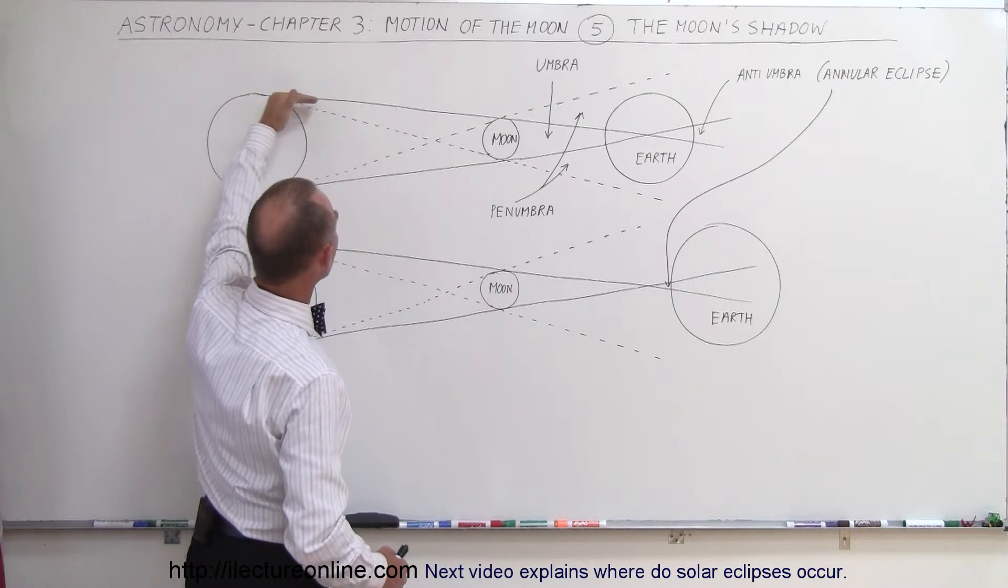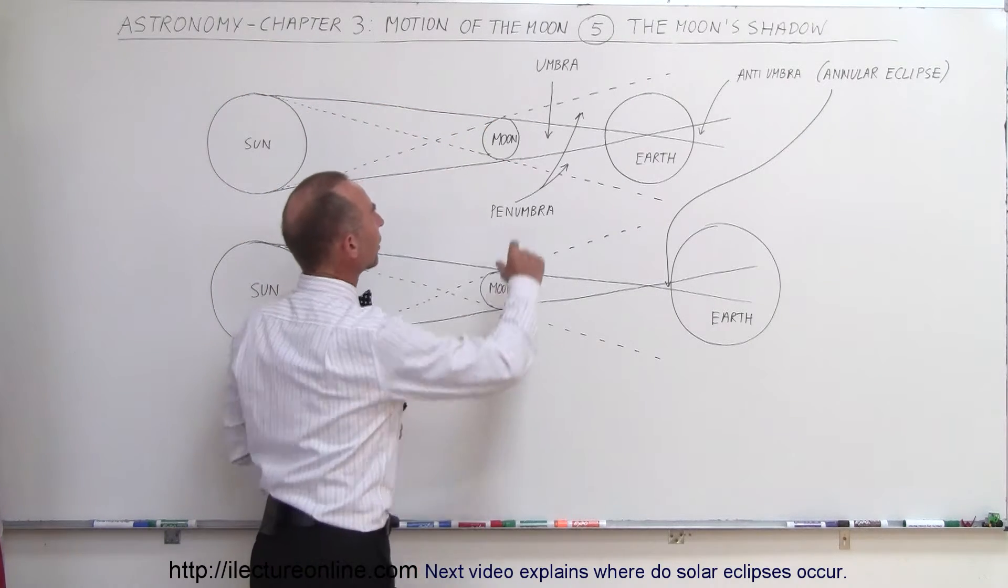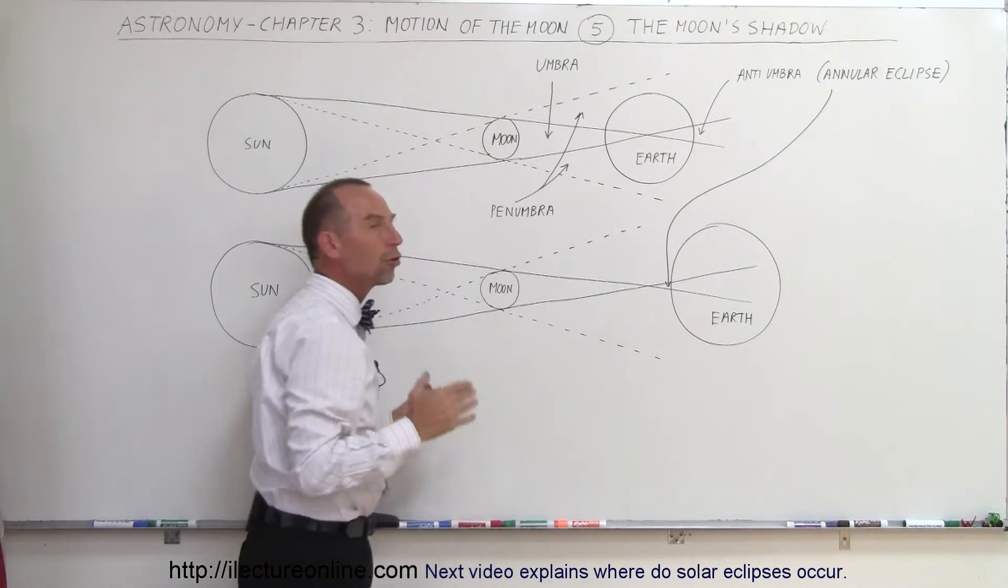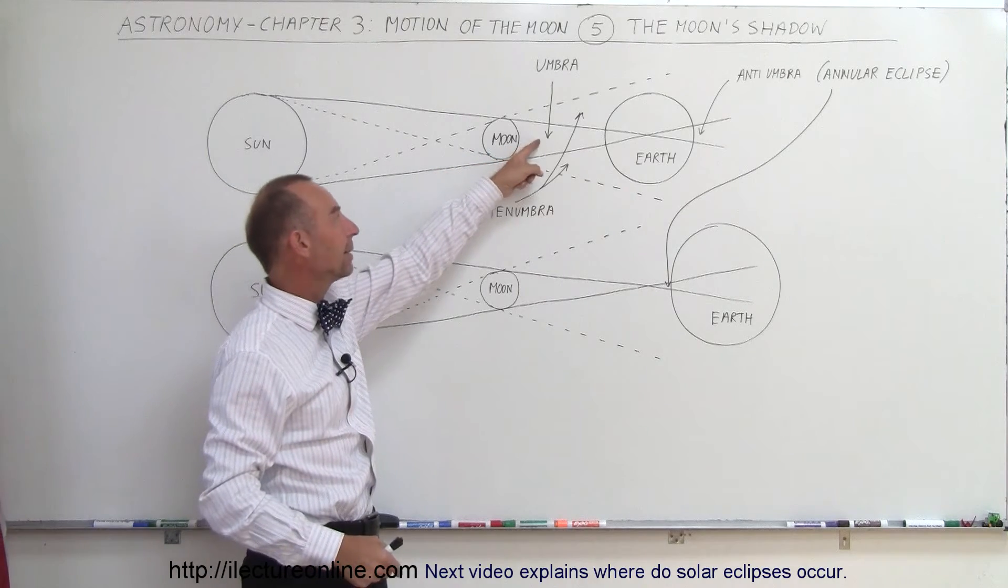And so the rays of the sun are now being blocked by the moon and the shadow of the moon is right behind the moon here. And this shadow portion right here is called the umbra. That's the dark region behind the moon where no sunlight can reach. So this is almost like being at night.